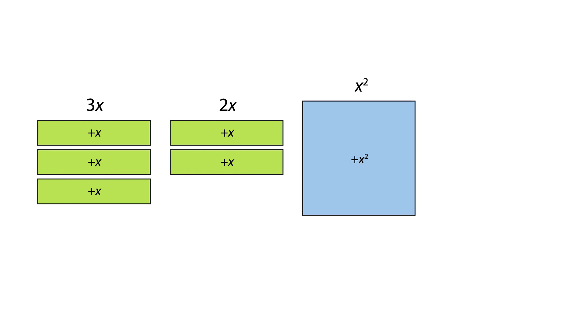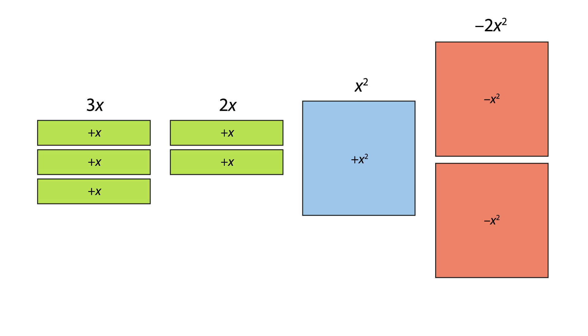Similarly, x squared and negative 2x squared are like terms. We can represent them using the same type of tiles, that is x squared tiles, even though one term is positive and the other is negative.